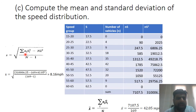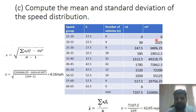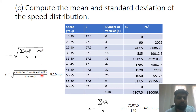For standard deviation, I need n times s-squared for each group. I multiplied column 3 by the square of column 2 and summed the results. Then using the standard deviation equation with N=169, x-bar=42.05, and dividing by n minus 1, the standard deviation comes out to be 8.16 miles per hour.